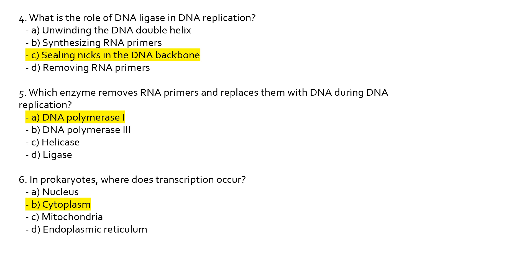Which enzyme removes RNA primers and replaces them with DNA during replication? DNA polymerase I removes the RNA primers. We have three types: DNA polymerase I removes RNA primers and joins the Okazaki fragments. DNA polymerase II functions as a backup polymerase for DNA repair, proofreading, and restarts replication when DNA is damaged. DNA polymerase III is the main replicative enzyme in prokaryotes, responsible for replicating the E. coli chromosome — it synthesizes both the leading strand and the Okazaki fragments.